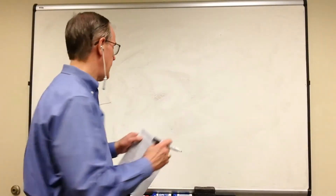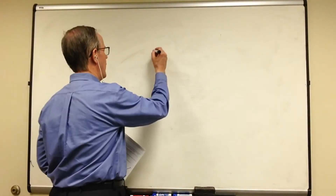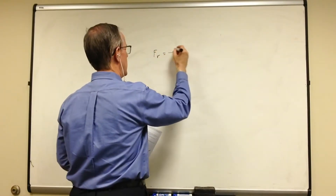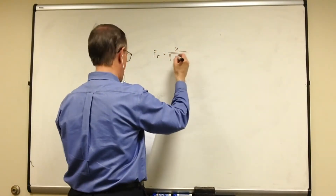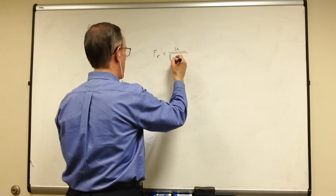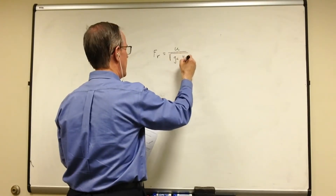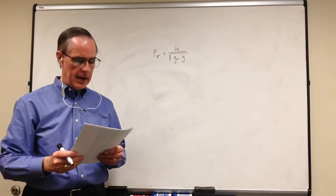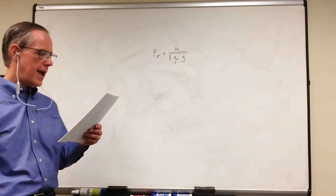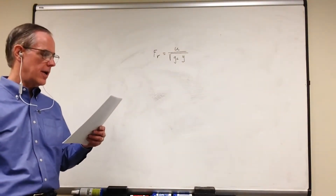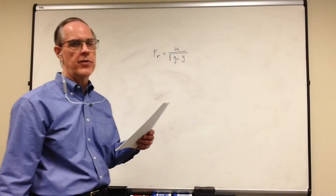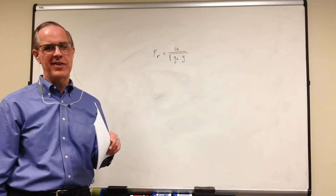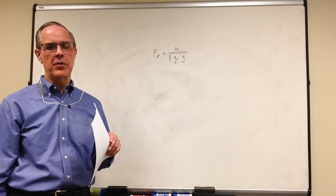The Froude number — and there are a couple of ways of designating this — is equal to the velocity over the square root of g times some distance. For this particular experiment, we're going to restrict ourselves to vertically walled channels.